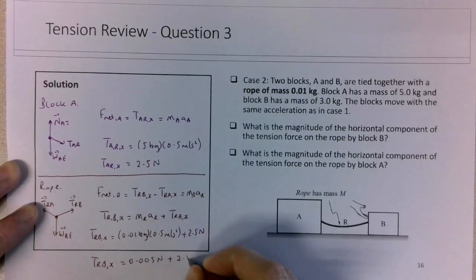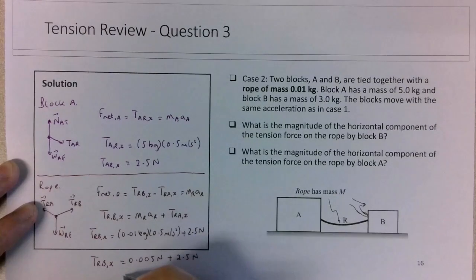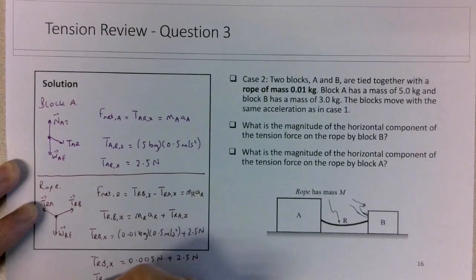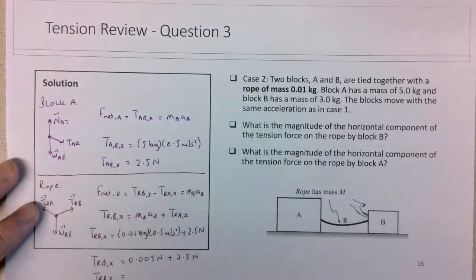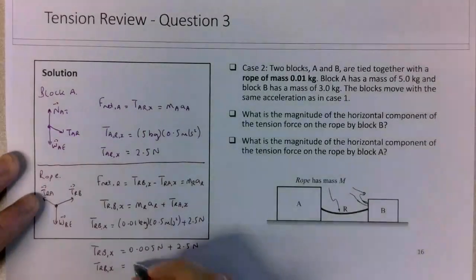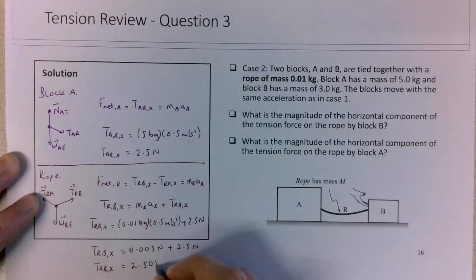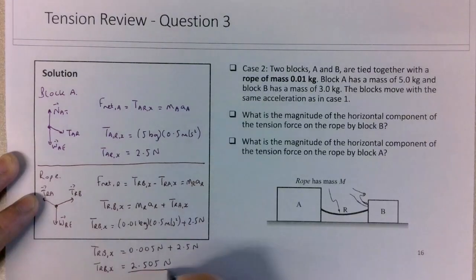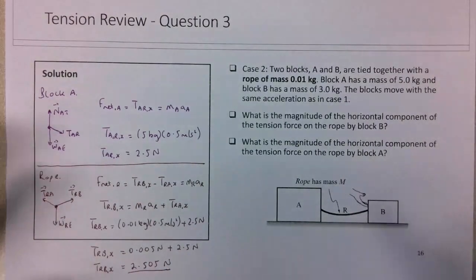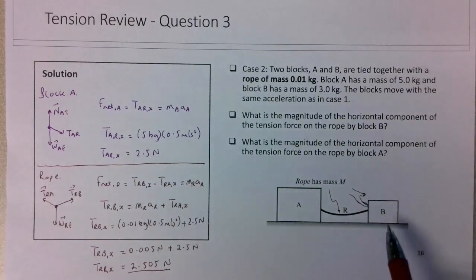Again, I'm sort of ignoring my sig figs here just to drive home an important point. So we have 2.505 newtons. So let me just finish out the question. This is how we determine the tension force on the rope at block B. We could have determined this number also just by considering block B, like I had done in question 1, where we're pushing block B with 4.005 newtons.